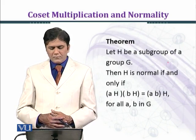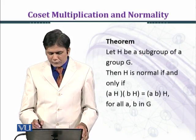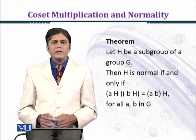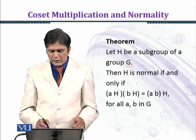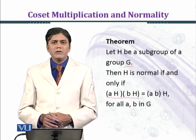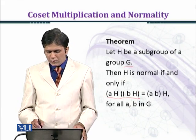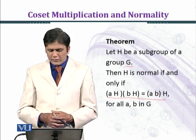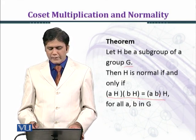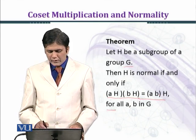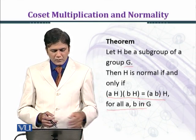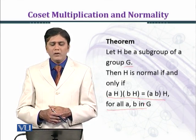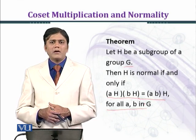Now state the theorem: Let H be a subgroup of a group G. Then H is normal if and only if AH · BH = ABH, that is, coset multiplication is defined as ABH for every A, B belonging to G. This condition provides us the condition of normality of a subgroup.